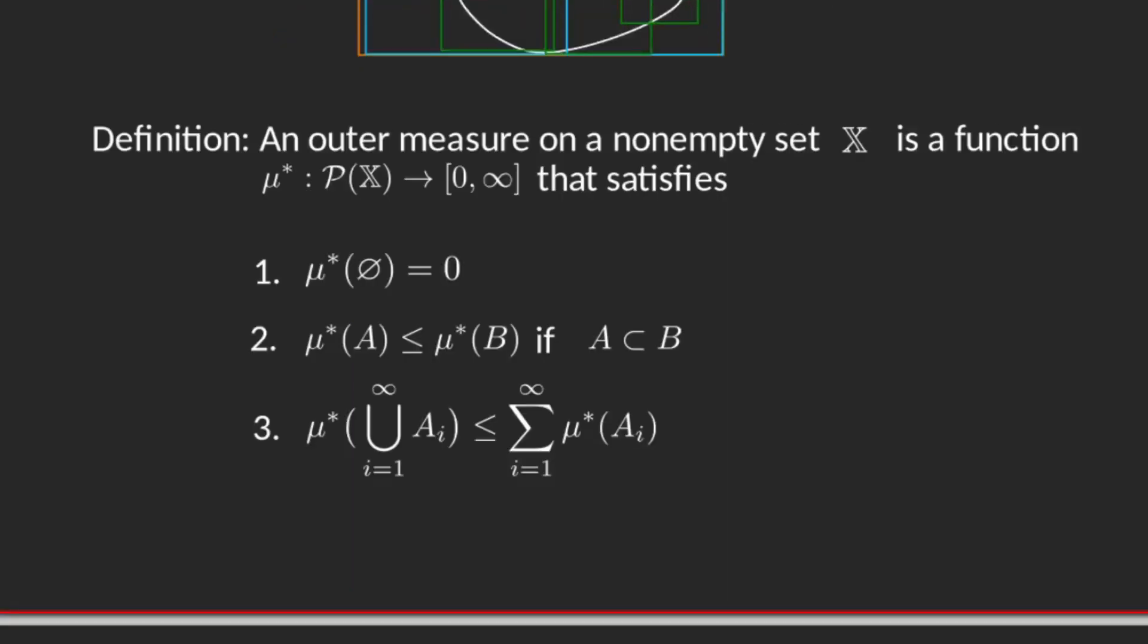And here it is. An outer measure is defined again on a non-empty set X. And it's a function that takes elements in parts of X. So here we have already surpassed that first difficulty because we're not asking for the domain of the outer measure to be a sigma algebra. I mean, parts of X is obviously a sigma algebra, but it's a very trivial one. So we are defining the outer measure over parts of X.